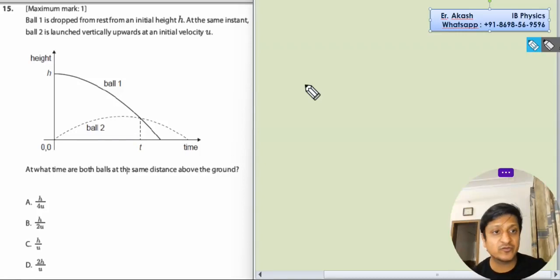So we have another question to solve. The question says ball one is dropped from rest from an initial height h. At the same instant, ball two is launched vertically upwards with an initial velocity u. At what time are both balls at the same distance from the ground? So first understand what it says.